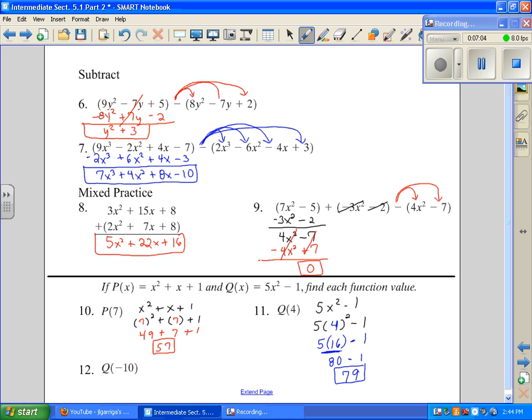And our last problem is Q of negative 10. That means go to the Q function, 5x squared minus 1. Everywhere x is at, put a parenthesis. I'm going to substitute negative 10 in there. So that becomes 5 times, now order of operations say we square this first. Well negative 10 squared is negative 10 times negative 10, which is positive 100. Multiply before you subtract. 500 minus 1 is going to be 499. And that's all. That was just some extra problems to review and to see more examples.